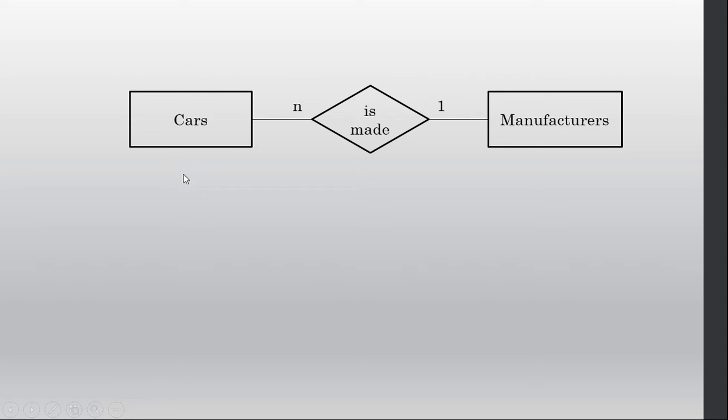So this diagram doesn't represent the fields, but it's showing us a relationship or a connection between two tables. So we have a cars table, which is in a rectangle. We have a manufacturer's, the car maker's table over here.